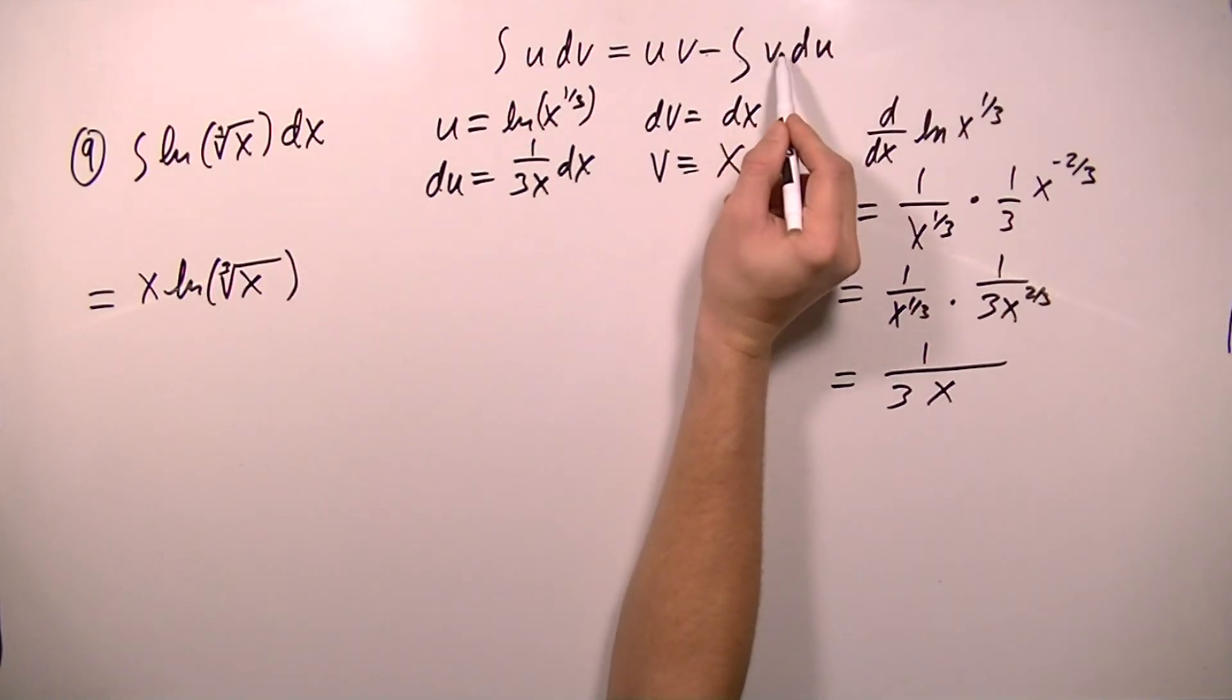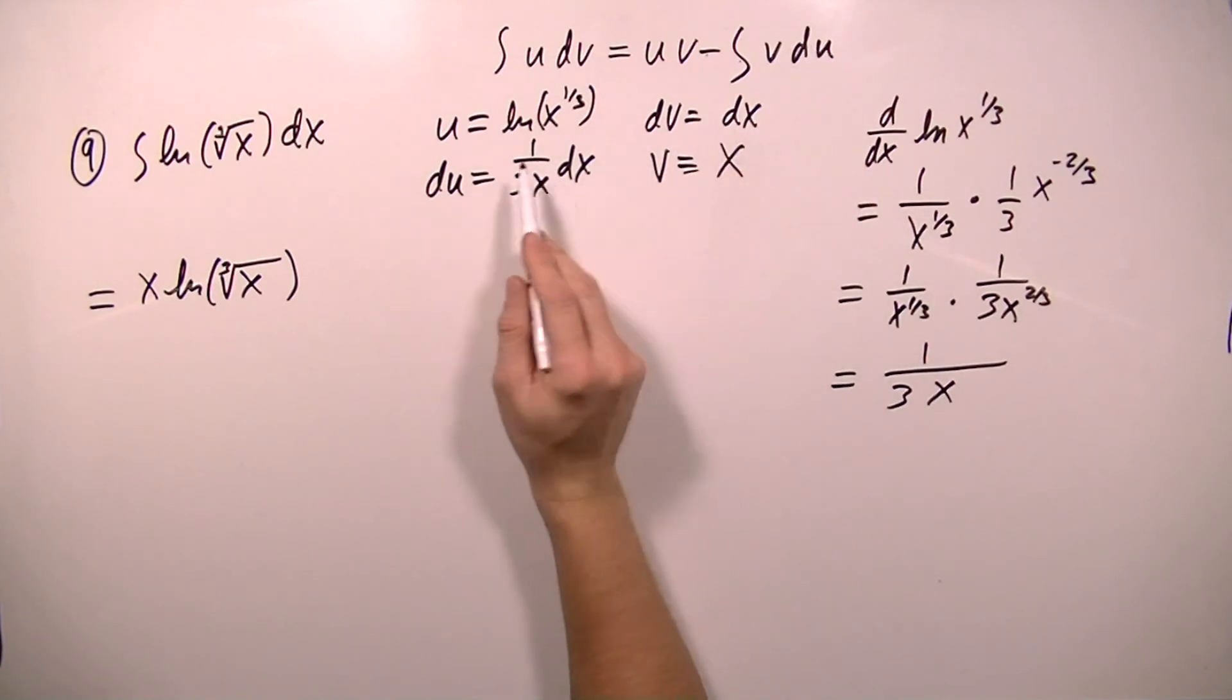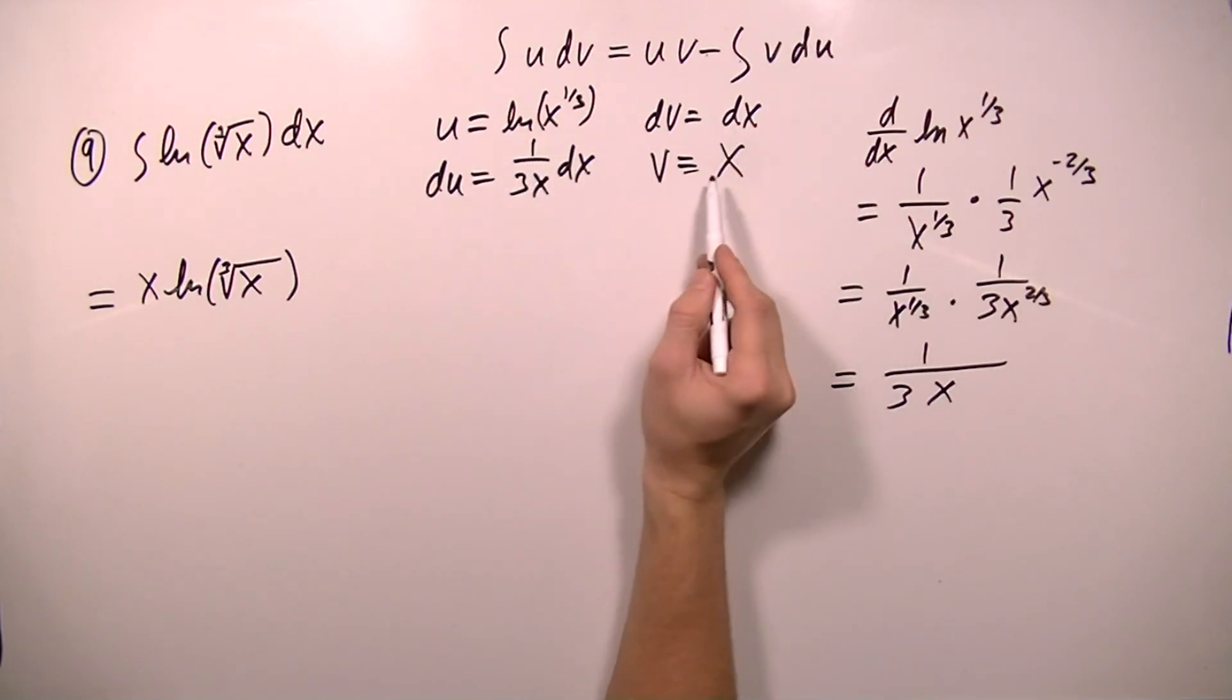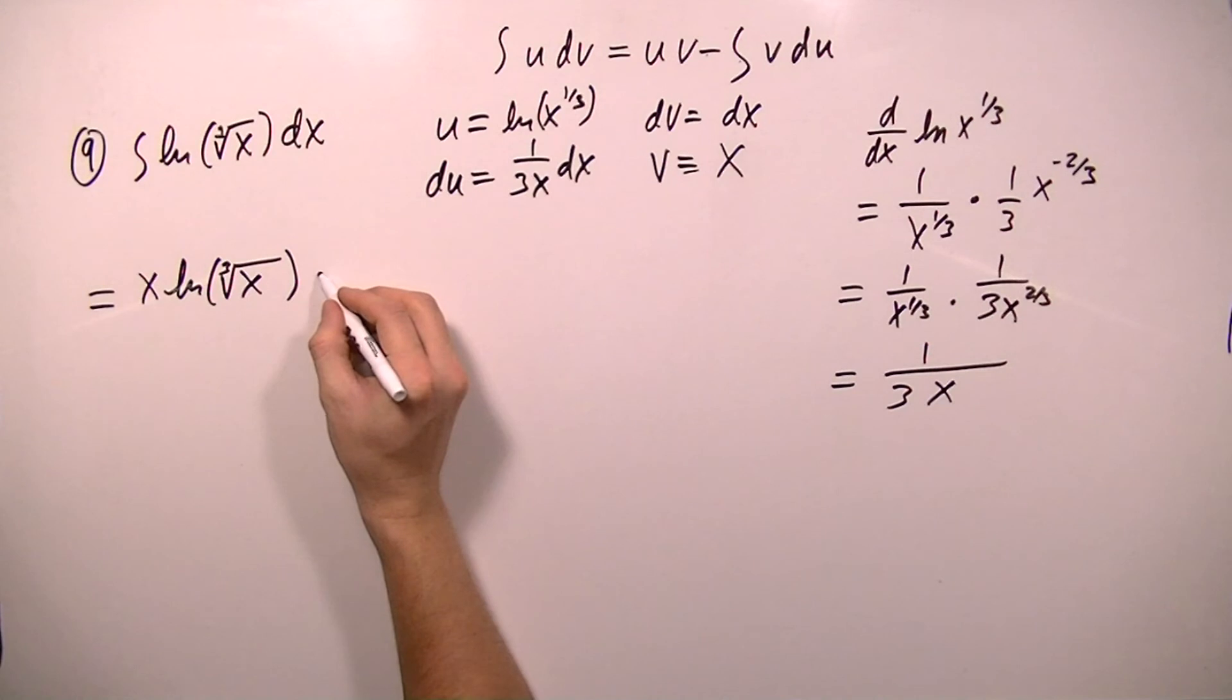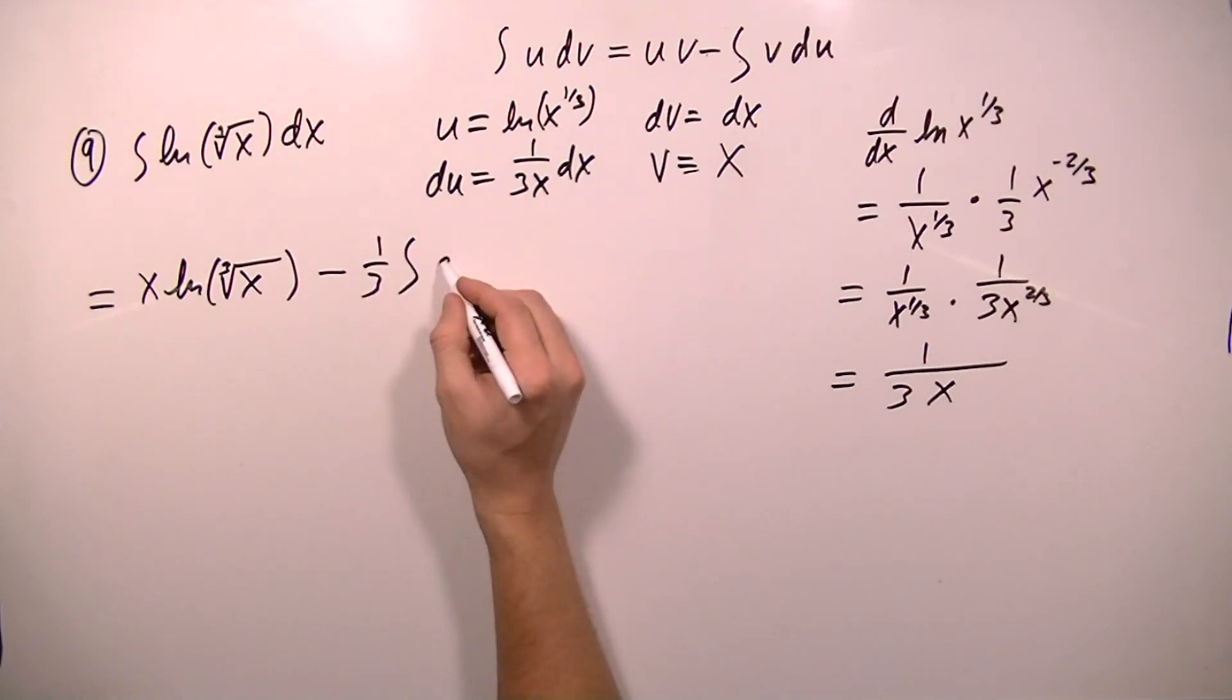Then I subtract the integral of v times du, and du is 1 over 3x, and v is x. So when I multiply these together, the x's will cancel and it will just be 1 third dx. So I'm going to subtract, and I'm going to factor that 1 third out. So it's just going to be the integral of dx.